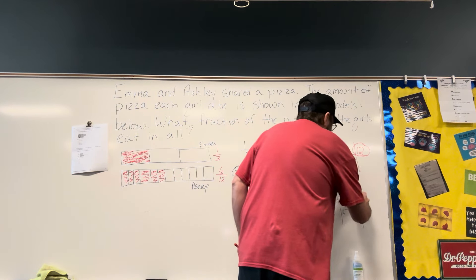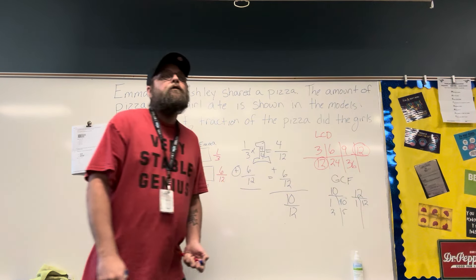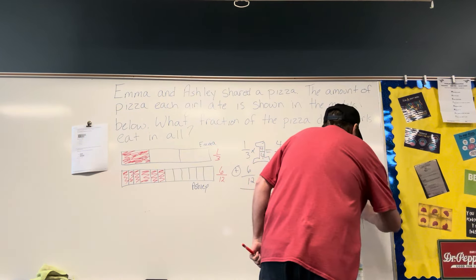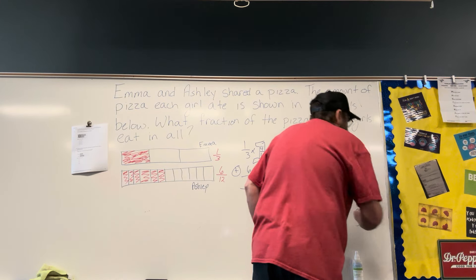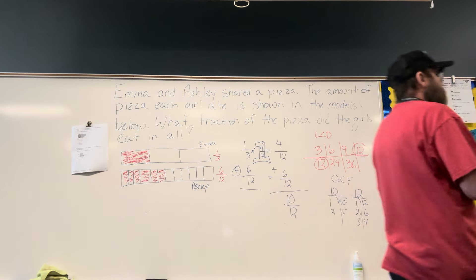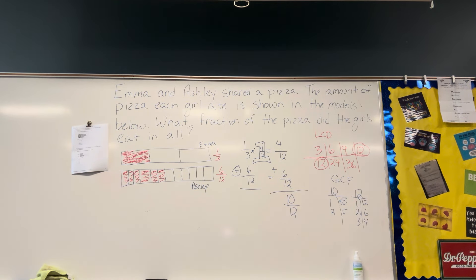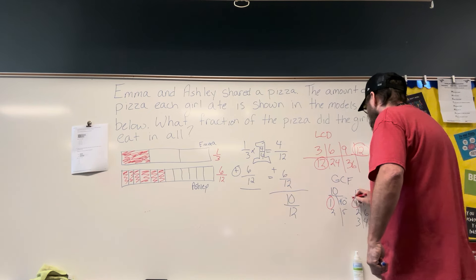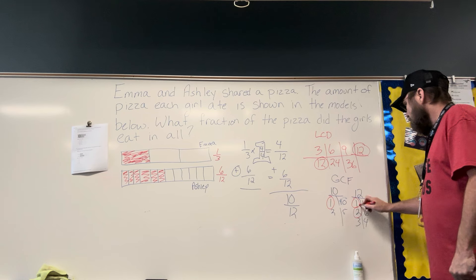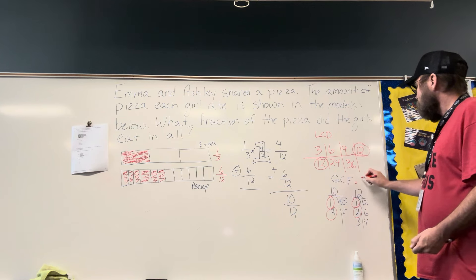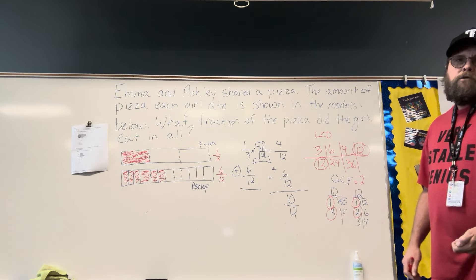For 12, we're going to have 1 times 12. It's always easiest to start with 1 and itself. It's an even number, so 2 — 2 times 6 and 3 times 4. If we look and see which factors they have in common, we're always going to have 1 in common, and they also have 2 in common. That is all they have in common, so my greatest common factor is 2.